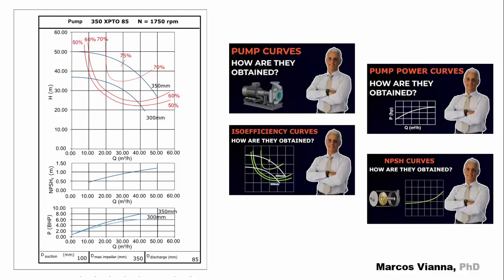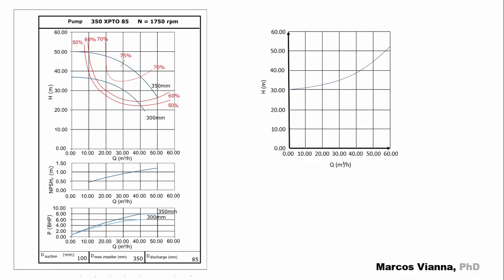You'll find specific videos in this channel that explain how to obtain each one of them. Also, we saw how to build this curve. It represents the so-called monometric head, which is the sum of the geometric head plus the head losses that will take place in the system that follows the pump.